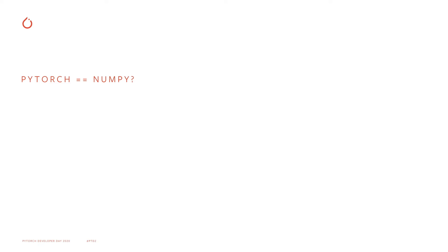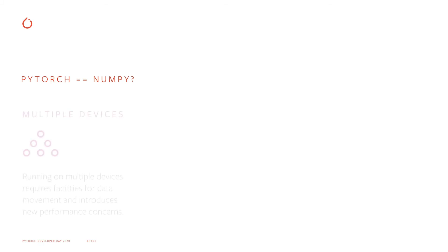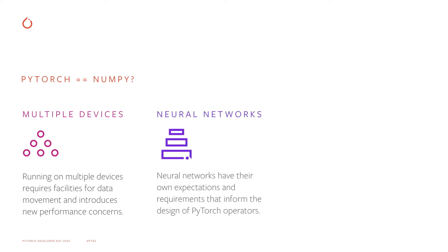There will always be differences between PyTorch and NumPy because they focus on different scenarios. PyTorch, for example, is designed to run on multiple devices, not just on the CPU. It also runs on GPUs, TPUs, mobile devices, and custom ASICs. PyTorch is also designed to run neural networks, and neural networks typically run in a lower floating point precision than scientific programs do.